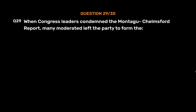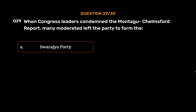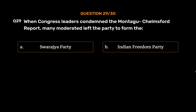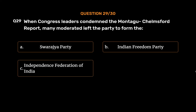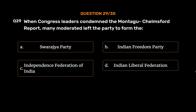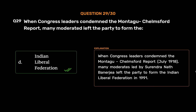Question No. 29. When Congress leaders condemned the Montague-Chelmsford Report, many moderates left the party to form the: Option A: Swarajja Party. Option B: Indian Freedom Party. Option C: Independence Federation of India. Option D: Indian Liberal Federation. The correct answer is Option D: Indian Liberal Federation. When Congress leaders condemned the Montague-Chelmsford Report, July 1918, many moderates led by Surendranath Banerjee left the party to form the Indian Liberal Federation in 1919.